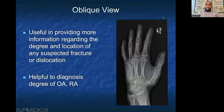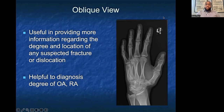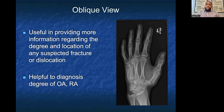Next we have the oblique view. This gives more information about the degree and location of a suspected fracture or dislocation — is it more volar or more dorsal? Which direction is the dislocation? It also shows ulnar or radial deviation of a joint. The oblique view helps refine our management and is the second most common view you'll see of the hand.